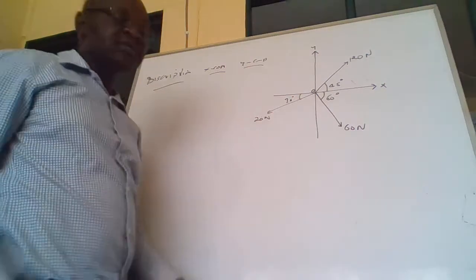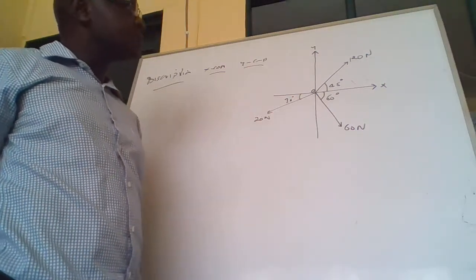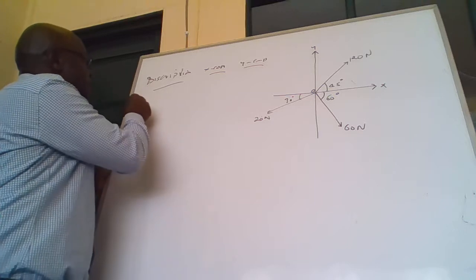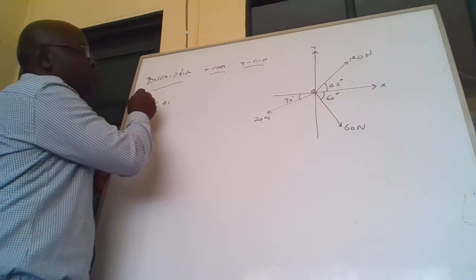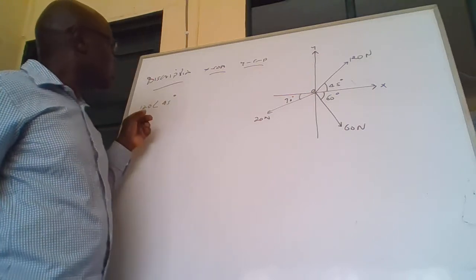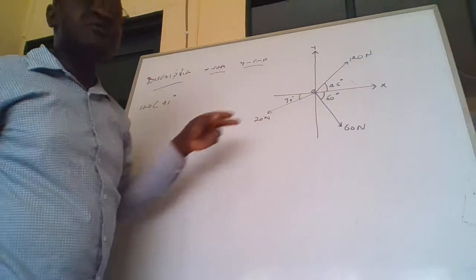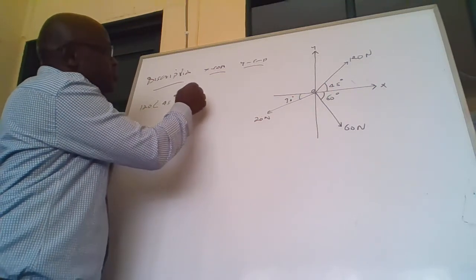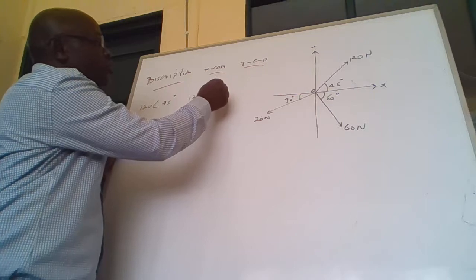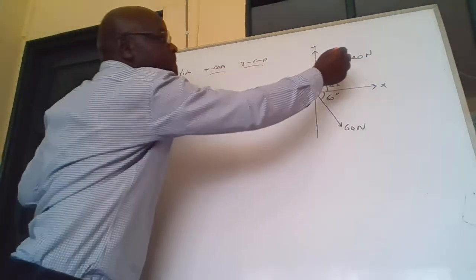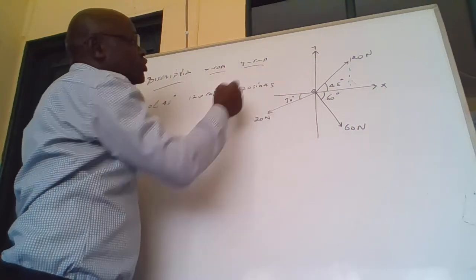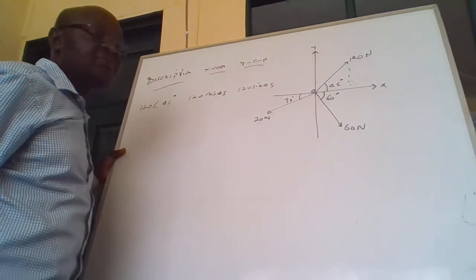Now we are going to resolve these forces in the X component and in the Y component. We start with the first force, which is acting in the direction of 45 degrees. So the X component of this force would be 120 N cos 45, and the Y component would be 120 N sin 45.